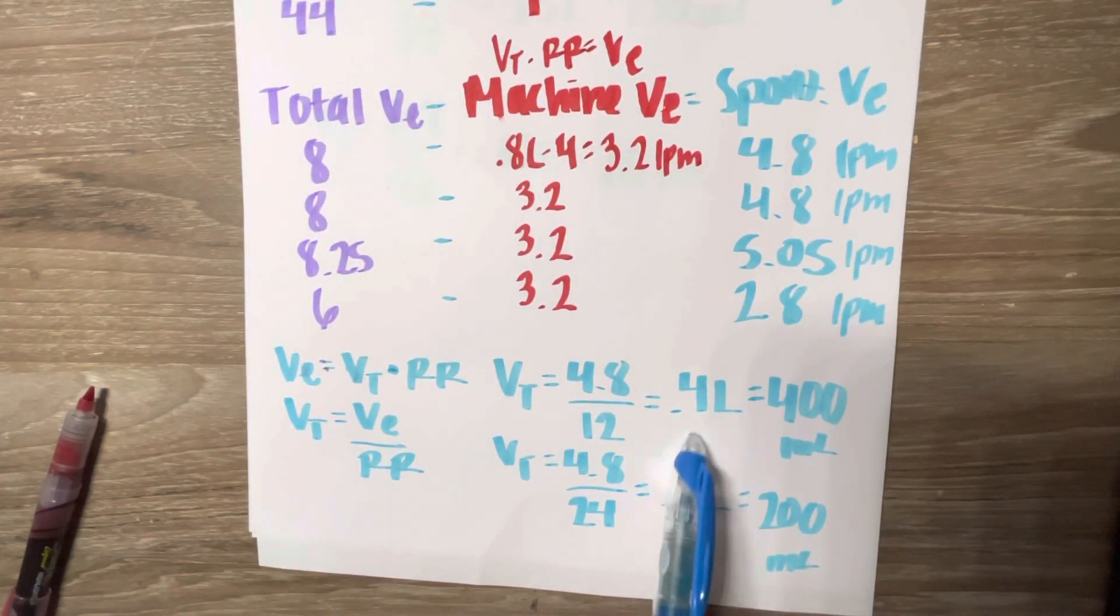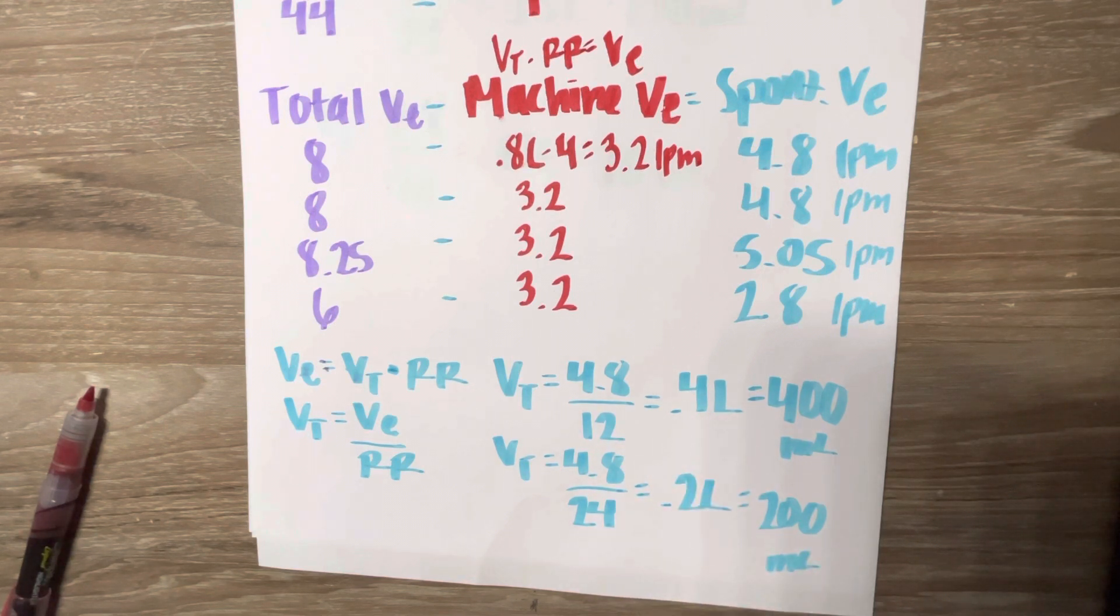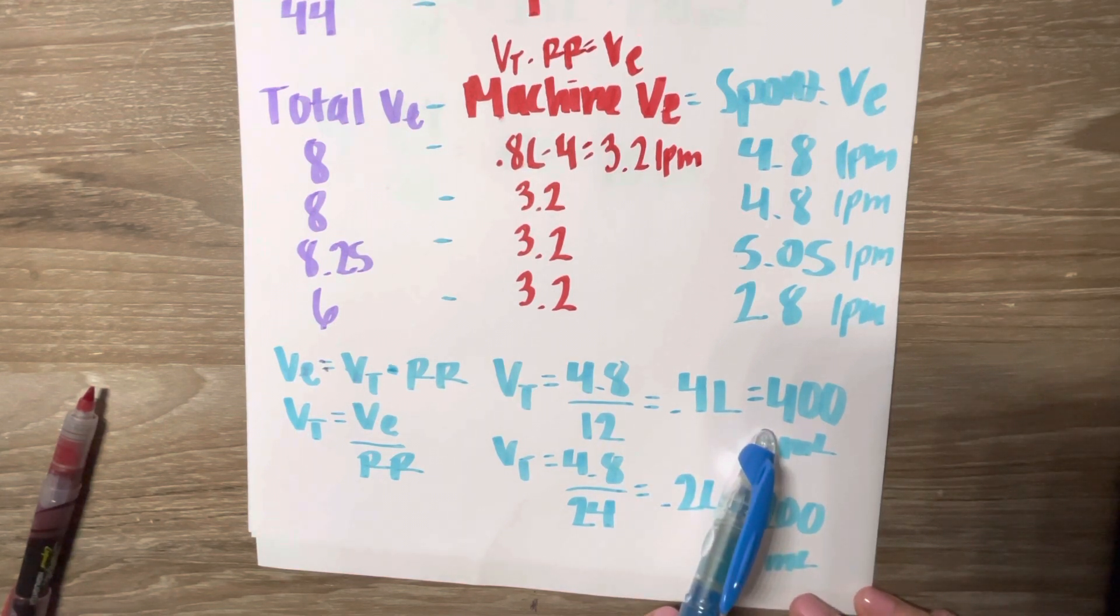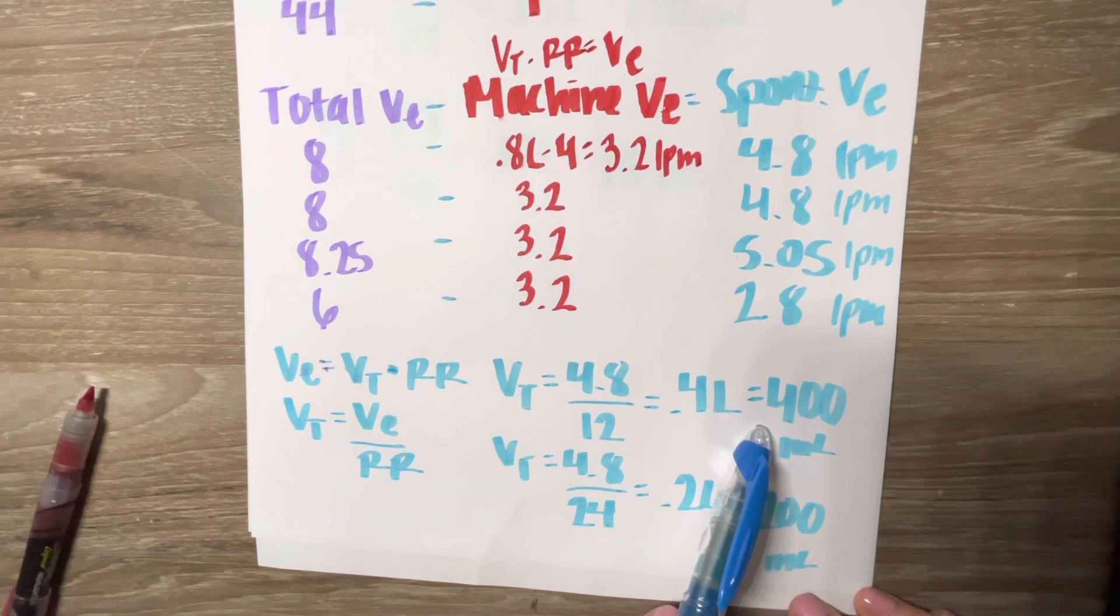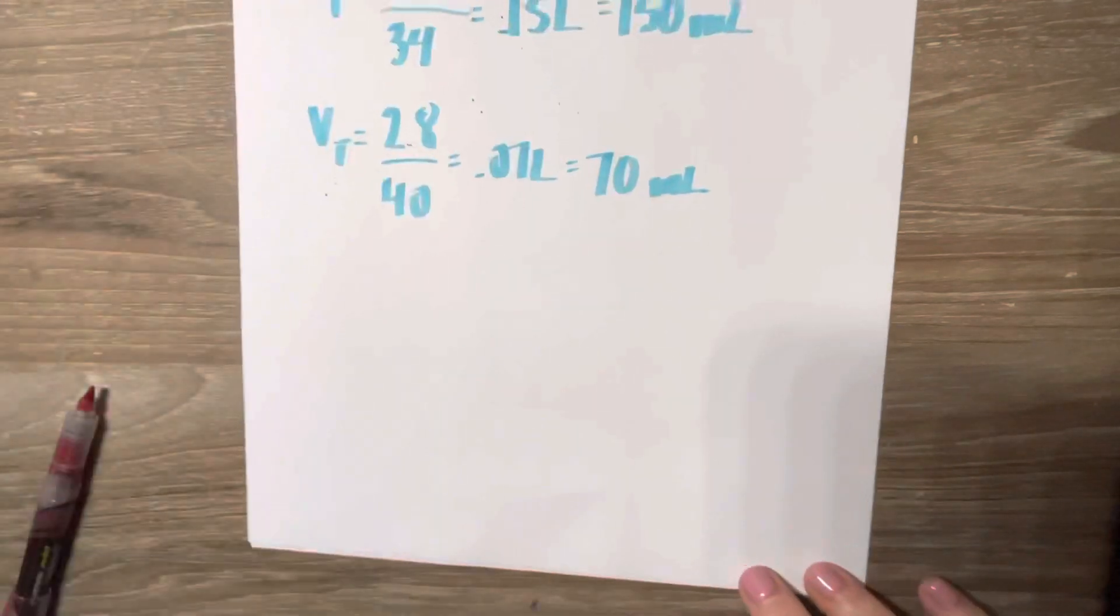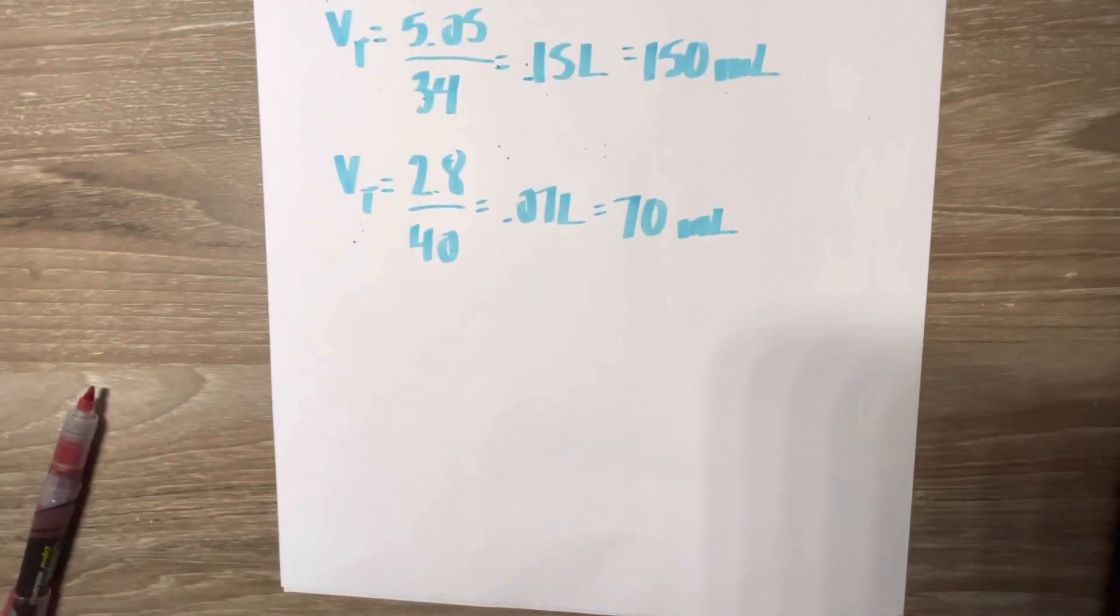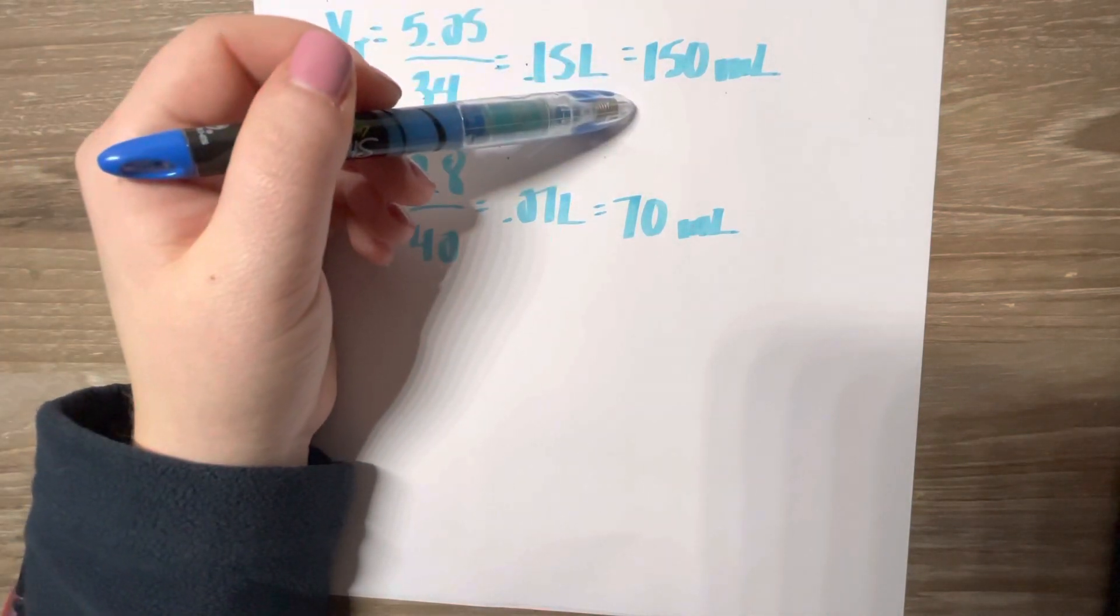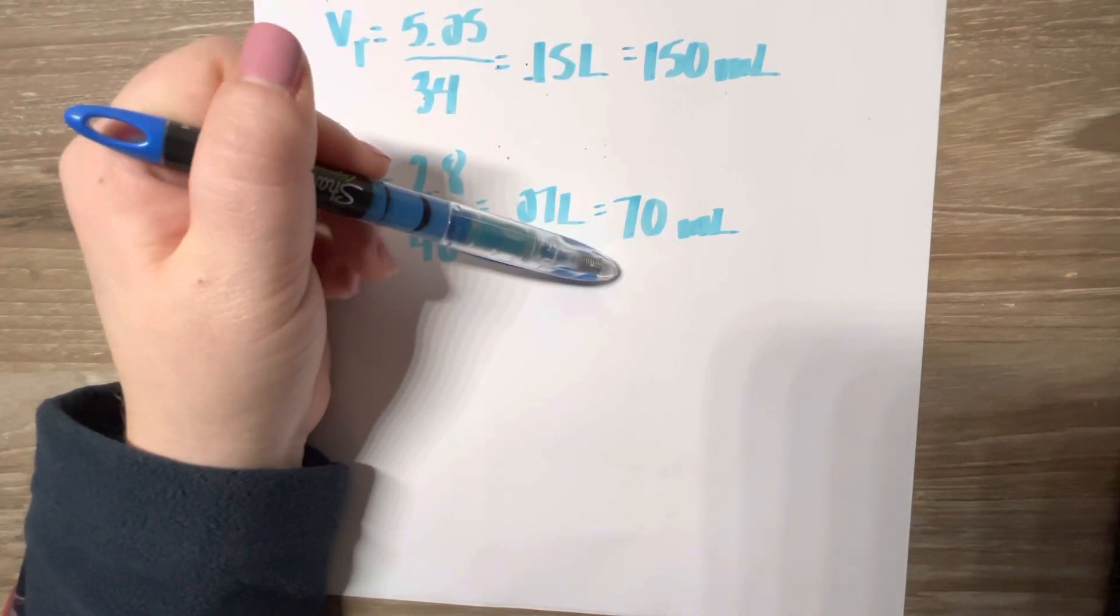I had to convert liters back to milliliters by moving the decimal place over three times. So at 8 a.m., our tidal volume was 400 mL. At 9 a.m., this was 200. At 10 a.m. it was 150. And at 11 a.m., it was only 70.